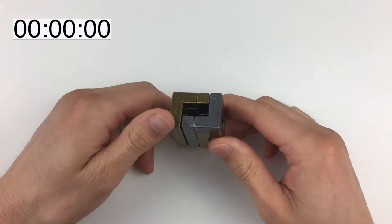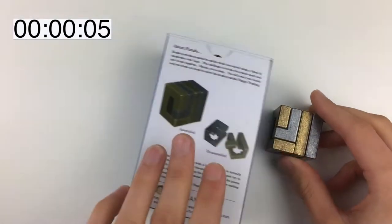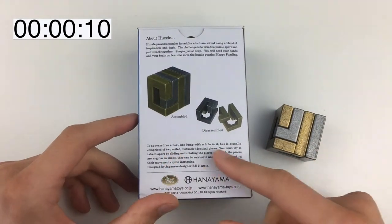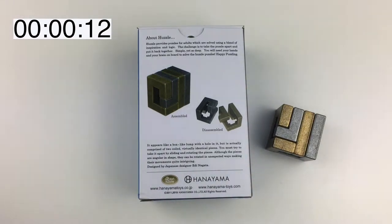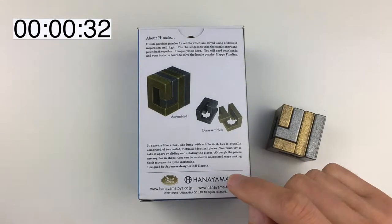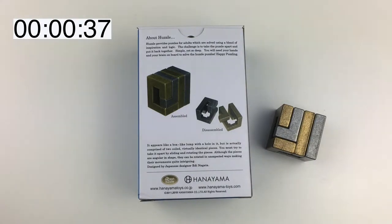So here is the coil puzzle. Now before we explore what movements we've got to start with let's have a quick look at the box. Obviously this is what we've got, this is what we want to aim for and here we always get like a little bit of a hint so it says it appears like a box like lump with a hole in it, but it's actually comprised of two coiled virtually identical pieces. You must try to take it apart by sliding and rotating the pieces. Although the pieces are angular in shape they can be rotated in unexpected ways making their movements quite intriguing and designed by Eddie Nagata from Japan.